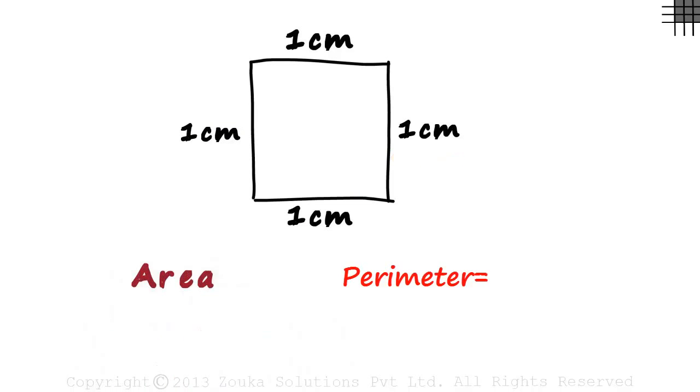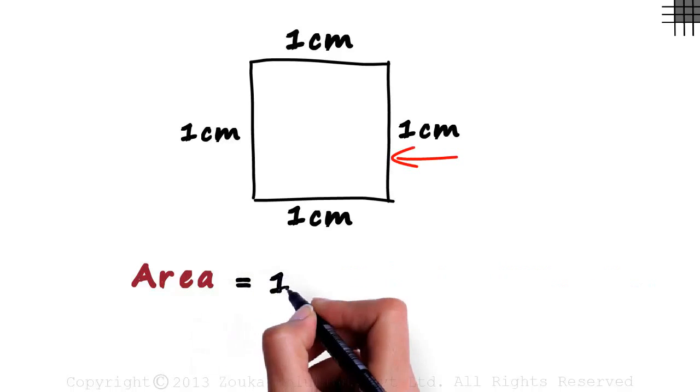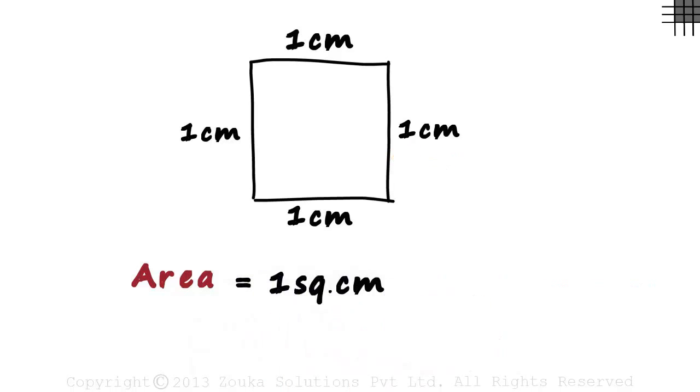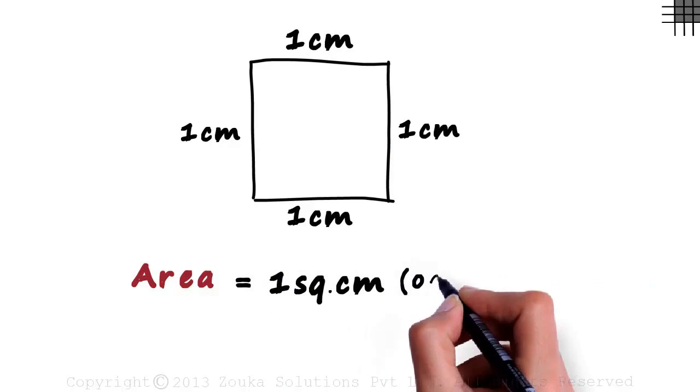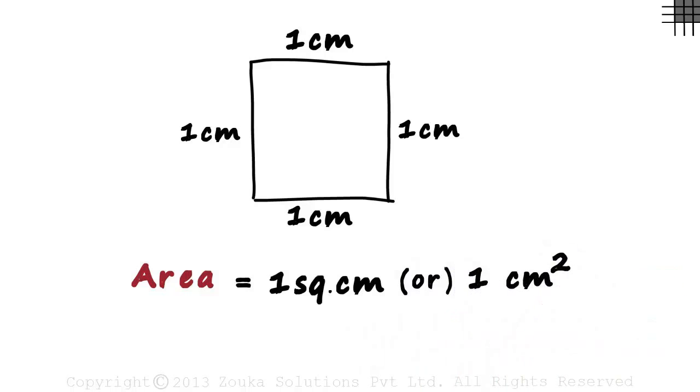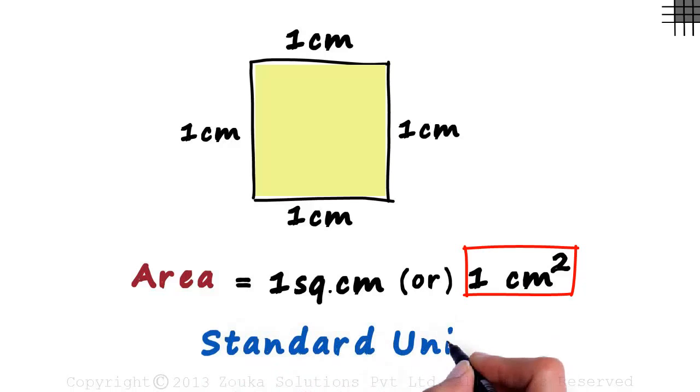Perimeter can be calculated as 4 multiplied by 1 centimeter, which equals 4 centimeters. The area of this square is 1 squared centimeters. This can also be written as 1 centimeter squared. This area of 1 centimeter squared will be the standard unit we use to find the areas of smaller rectangles or squares.